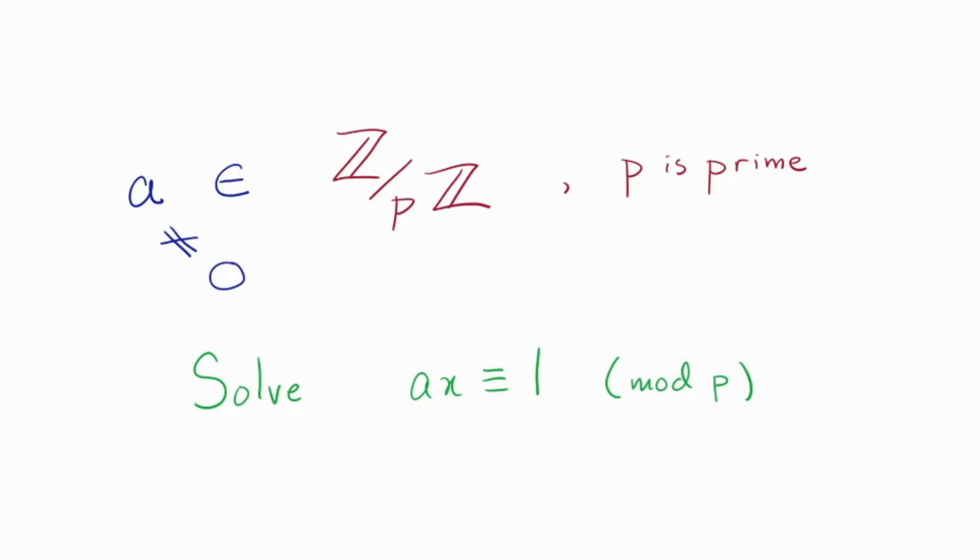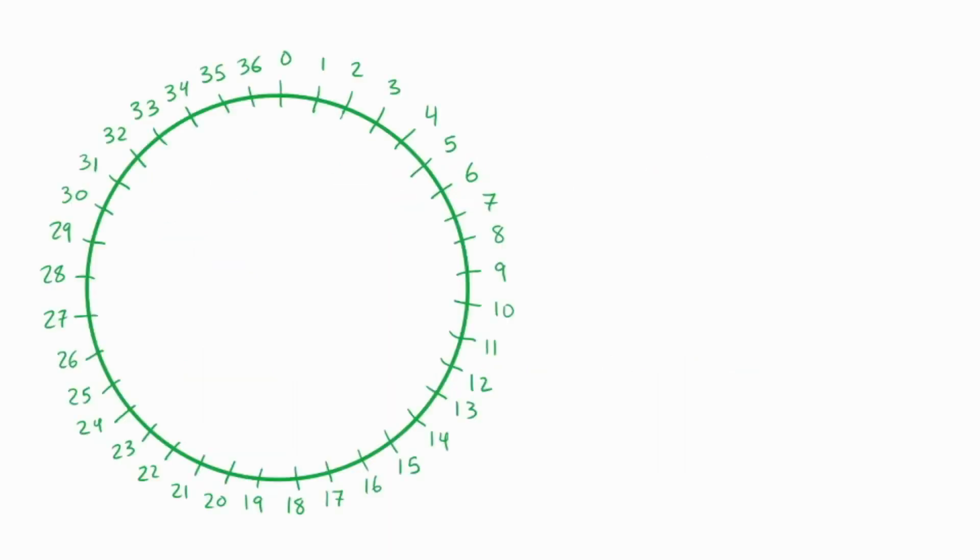The key idea here is to loosen the target. Instead of finding a multiple of a that's 1, that's exactly 1, we're going to find a multiple of a that's smaller than a.